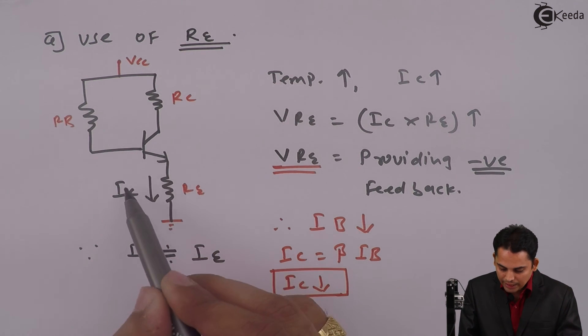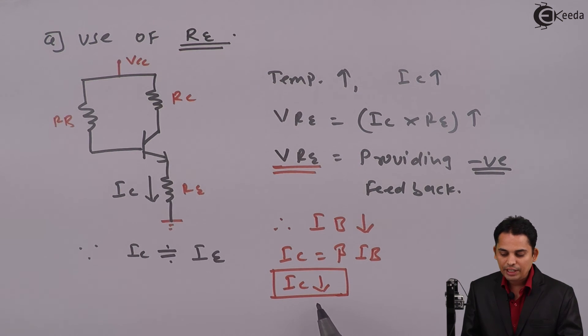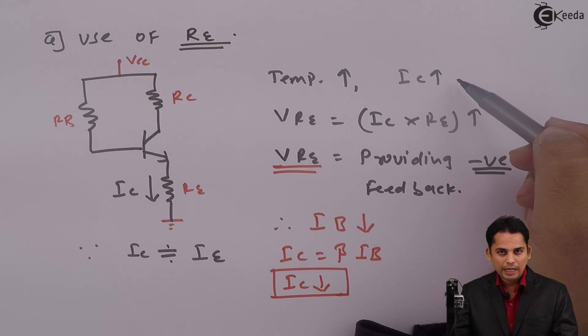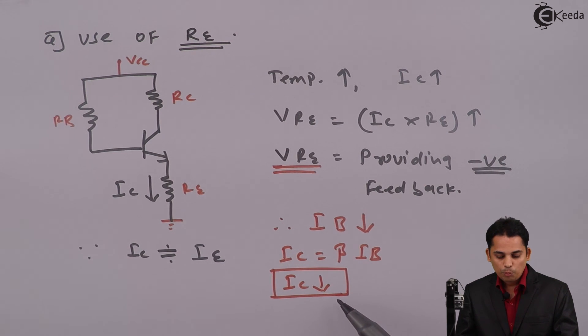Because of use of RE in the circuit, IC decreases. Now we started our expression with increment in the collector current, and at the end, because of RE, we got that IC is decreasing, and this will add DC stability in the circuit. Hence, to add DC stability in the circuit, RE or emitter resistor is used. Thank you.